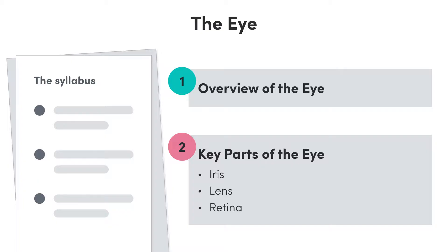In this video we're going to be covering everything you need to know about the structure and function of the eye. We'll start with a general overview of how the eye works, before focusing on the structure and function of some of the most crucial parts of the eye, including the iris, lens and retina.